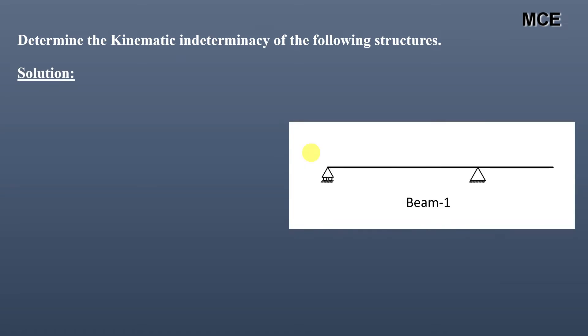Determine the kinematic indeterminacy of the following structures. For beam one, always remember that in kinematic indeterminacy we take both internal hinges as well as free supports as joints. We can see in this beam there are three reactions — one at the roller and two at the pinned end — and there are three joints: one, two, and three. There is no internal hinge present, so m′ = 0.